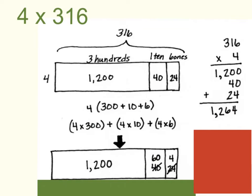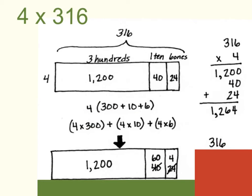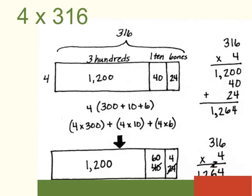Now let's use the standard algorithm to solve this problem. 316 times 4. Start out in your ones place. 4 times 6 is 24. So you put your 4 in your ones place and you carry your 2 above your tens place. Now 4 times 1 ten would be 40, and then you have 2 more tens, which would make that 60. So you put your 6 in your tens place. And then finally, 4 times 3 is 12, or you could say 4 times 3 hundreds is 1,200.